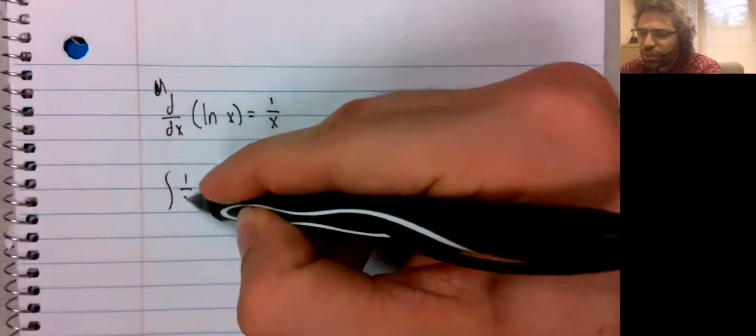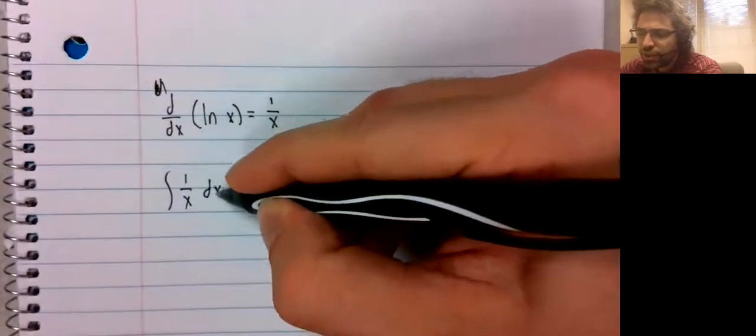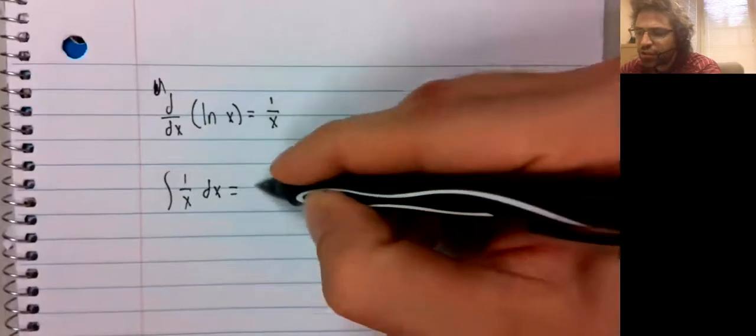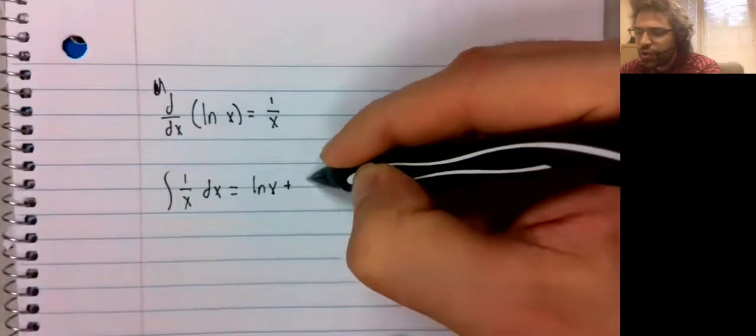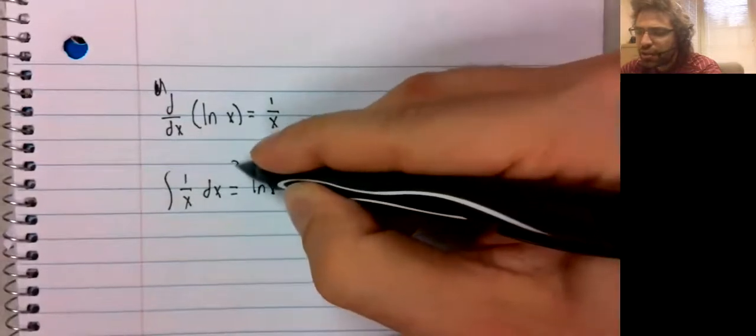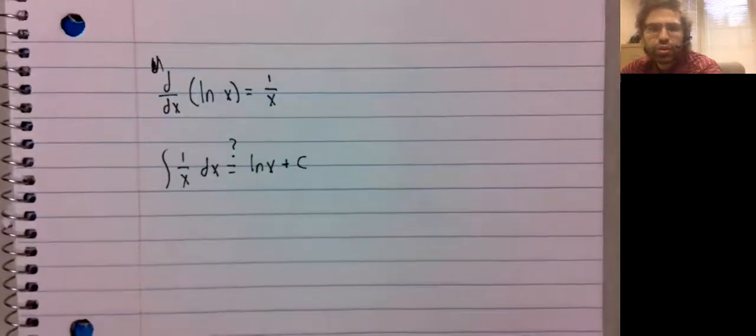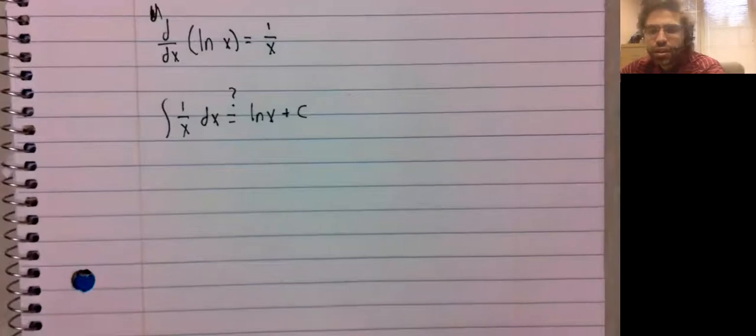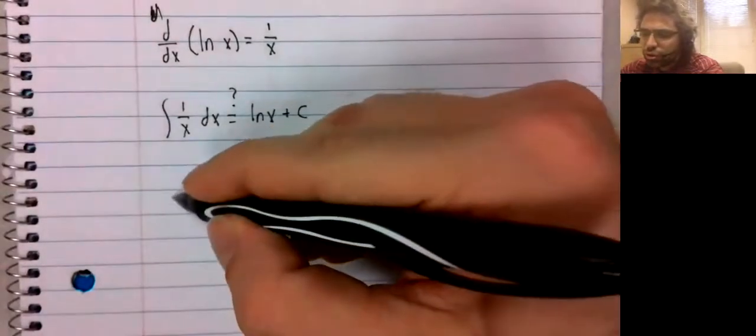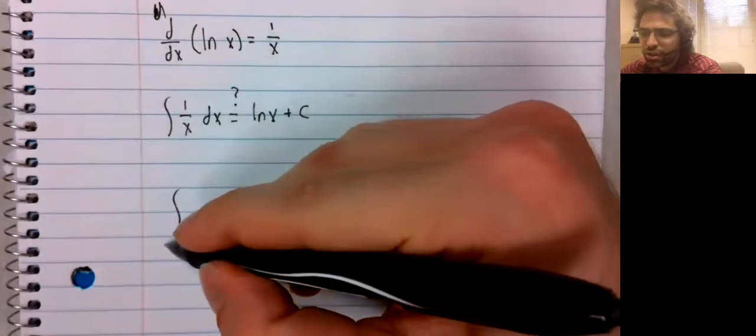So, the temptation is to say that the anti-derivative of 1 divided by x is the natural logarithm of x. That's almost true, but it can't quite be true.